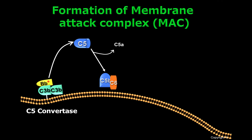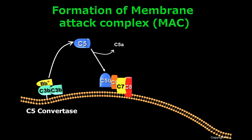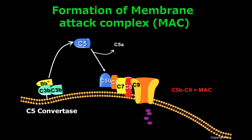C5B will be recognized by C6 and C7. This complex, C5B-C6-C7, will bind to the cell surface of the pathogen, leading to the recruitment of C8, which will insert into the cell membrane of the pathogen. C8 will then recruit several molecules of C9, generating a pore on the cell membrane. This complex, C5B-C9, is called MAC, or membrane attack complex, and will lyse and destroy pathogens.